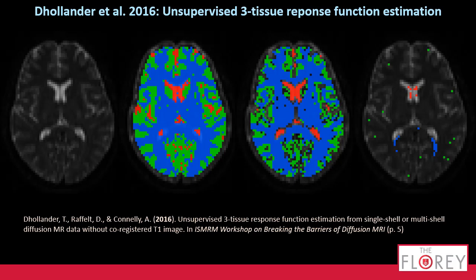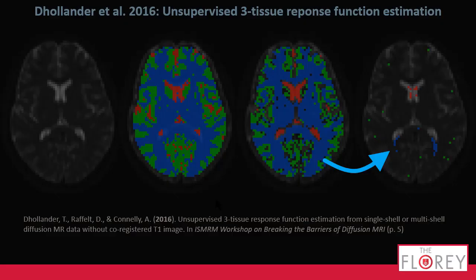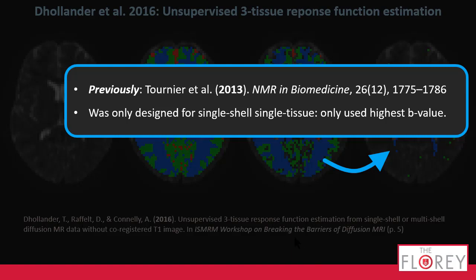That worked, but we're going to improve it anyway. The step we are going to improve in particular is the one that takes us from this white matter segmentation to these final blue voxels. Previously, we did that with an algorithm that worked pretty well, but it was only designed for a single-shell, single-tissue setting, and it only used the highest B value, discarding all the other B values. So, let's see if we can do better.